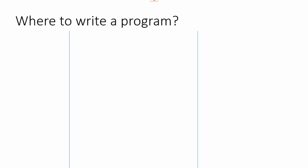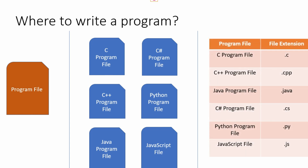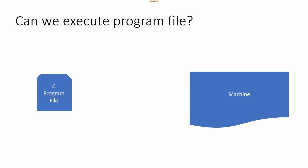Where will I write my program? Obviously we'll write a program in a program file. Depending on which programming language you are using, you'll create an appropriate program file. Different languages define different file extensions: C uses .c, C++ uses .cpp, Java uses .java, and so on for other programming languages.